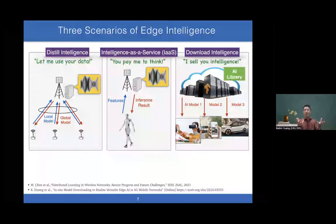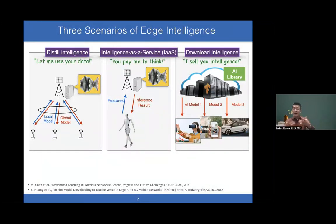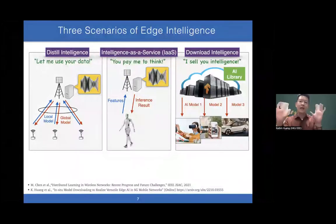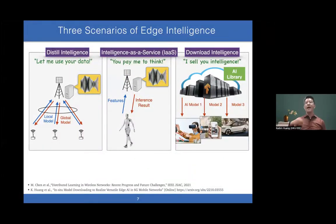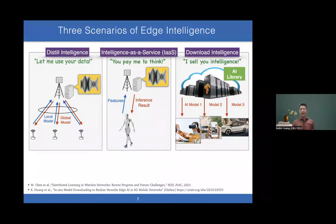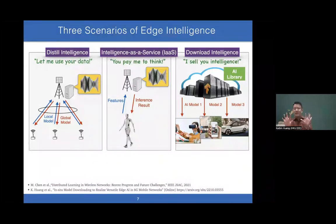The third scenario is download intelligence. Maybe you don't want to expose your data features to me. But if you pay me, I can download the AI model to you. Based on your need and situation, you send a request. I have an AI library in the network and can download whatever model you need—VR, AR, navigation, or auto-driving. These three scenarios are the major services provided by 6G.